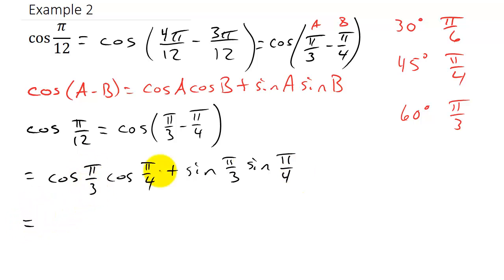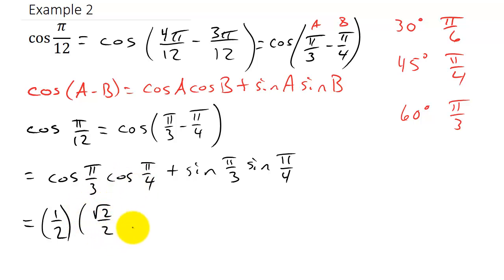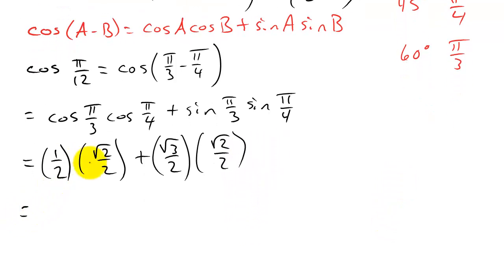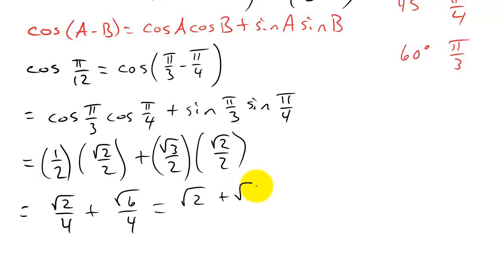We know these values: cosine of π/3, which is cosine 60, equals 1/2. Cosine of π/4, which is 45 degrees, equals √2/2. Sine of π/3, which is sine 60, equals √3/2. And sine of π/4 equals √2/2. Multiplying gives √2/4 plus √6/4, which combines to (√2 + √6) / 4, and that's the answer.